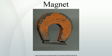An electromagnet, in its simplest form, is a wire that has been coiled into one or more loops, known as a solenoid. When electric current flows through the wire, a magnetic field is generated, concentrated near and especially inside the coil, with field lines very similar to those of a magnet. The orientation of this effective magnet is determined by the right-hand rule. The magnetic moment and field of the electromagnet are proportional to the number of loops of wire, the cross-section of each loop, and the current passing through the wire. If wrapped around a soft ferromagnetic material such as an iron nail, the net field produced can result in a several-hundred to thousand-fold increase in field strength.